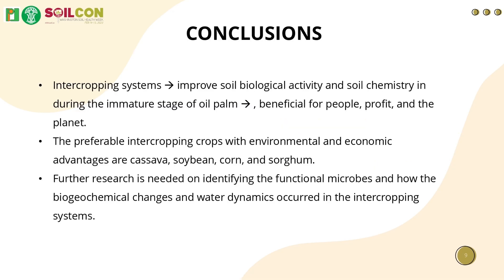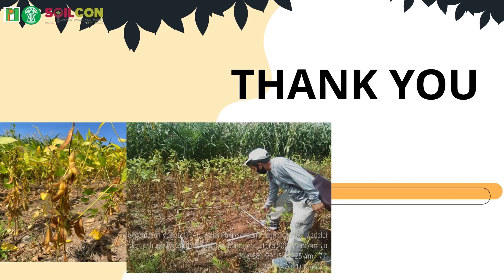All in all, we conclude that the intercropping system in immature oil palm can achieve the goals of promoting sustainable oil palm and soil health, as well as sharing benefits for people, profit, and planet. Based on environmental and economic advantages, we recommend cassava and soybean as the top two crops for intercropping. Thank you for your time and attention — if you have any questions, feel free to reach out.